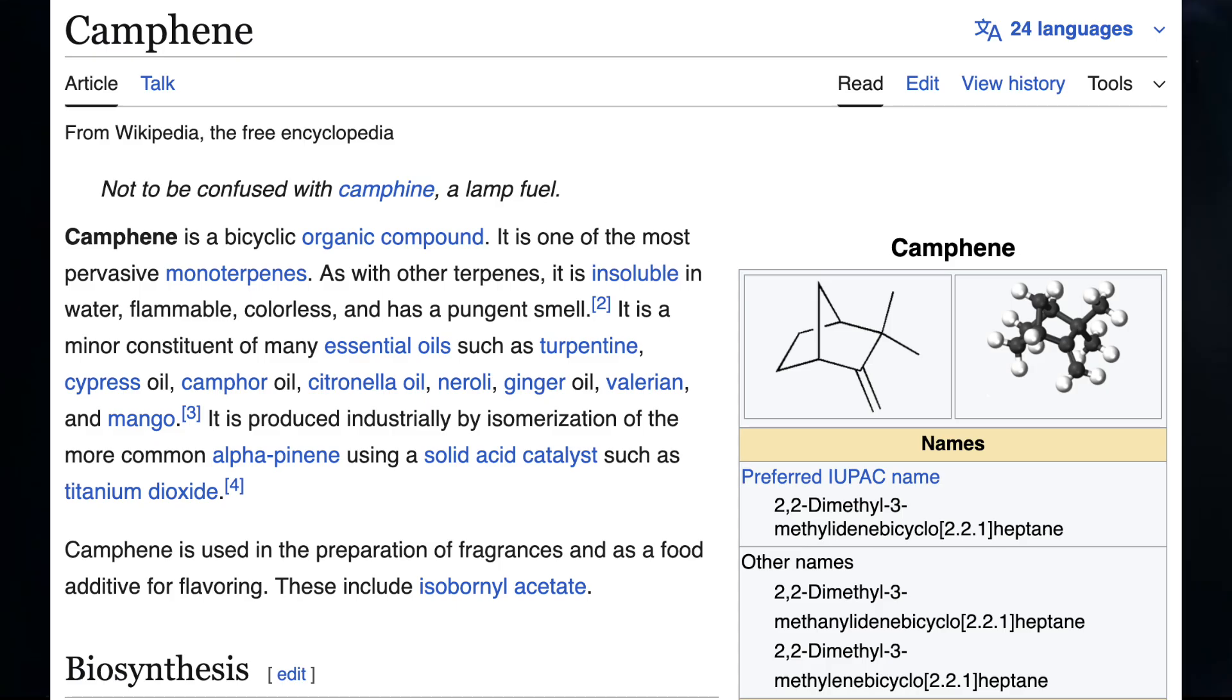And camphene is a bicyclic, waxy, colorless organic compound that is a common terpene found in essential oils.